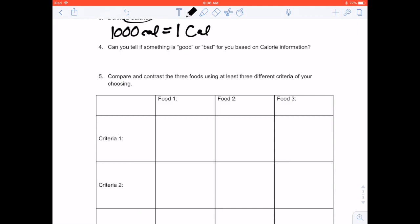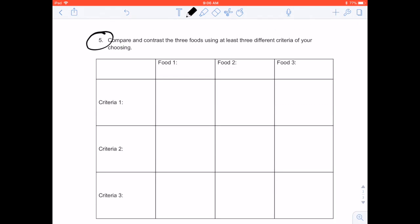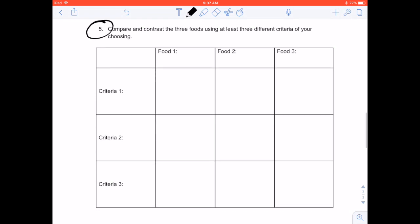And I'll just jump to this question five. Compare and contrast the three foods using at least three different criteria. This can be anything. Okay, so it can be how quickly they burned, the odor, how much soot they burned, could be what the food was made up of, could be if it was processed or not processed, if it was carbohydrates or lipids. So really any three criteria that you want to use for that.